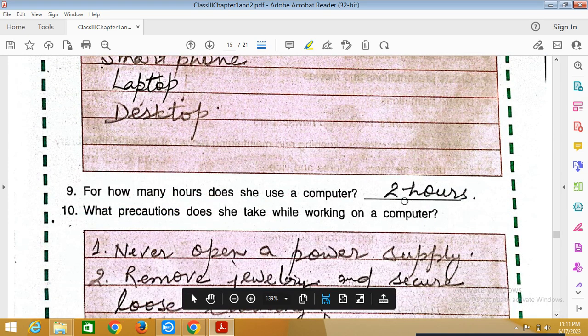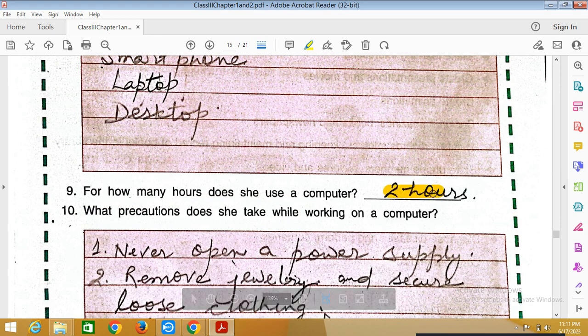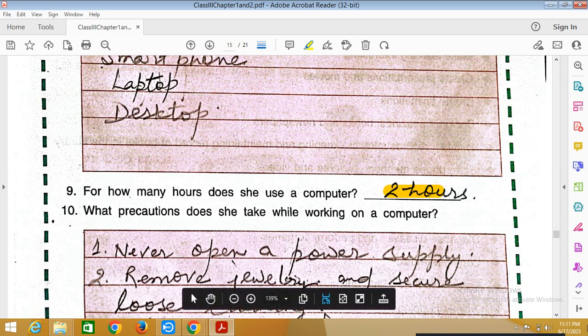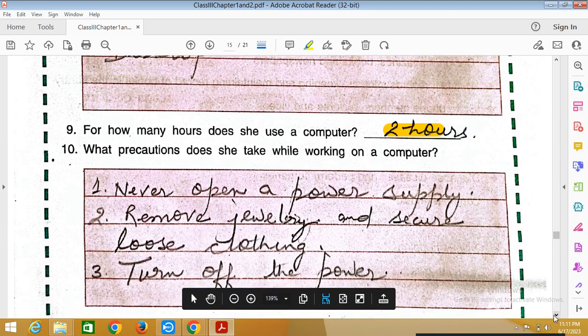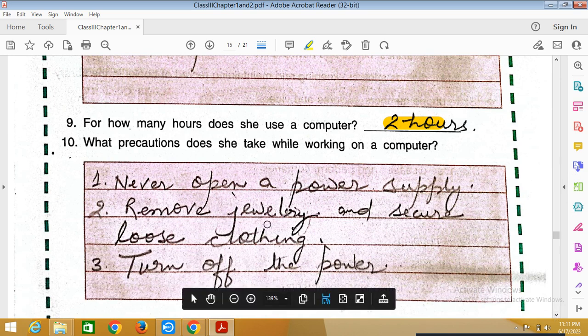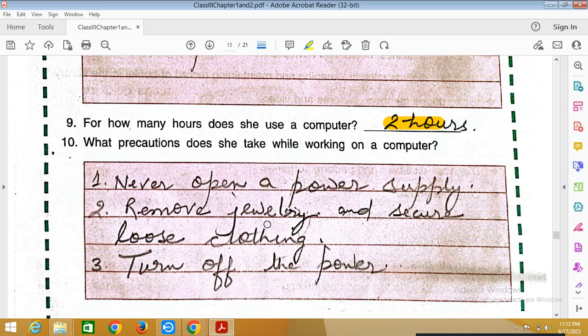For how many hours? Two hours, three, four, five, six hours - just write it. What precautions does she take while working on a computer? Never open a power supply. Remove jewelry and secure loose clothing. Jewelry or clothes should not be loose, so that work is easy.